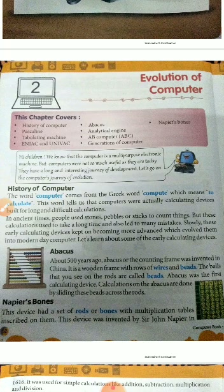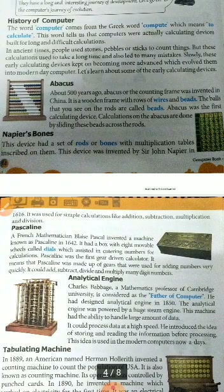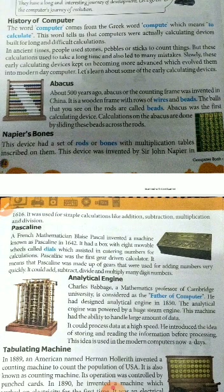Next device is Napier's Bones. This is a calculating device made of rods and bones. It was invented by Sir John Napier in 1616. Using this device, we can perform addition, subtraction, multiplication, and division.